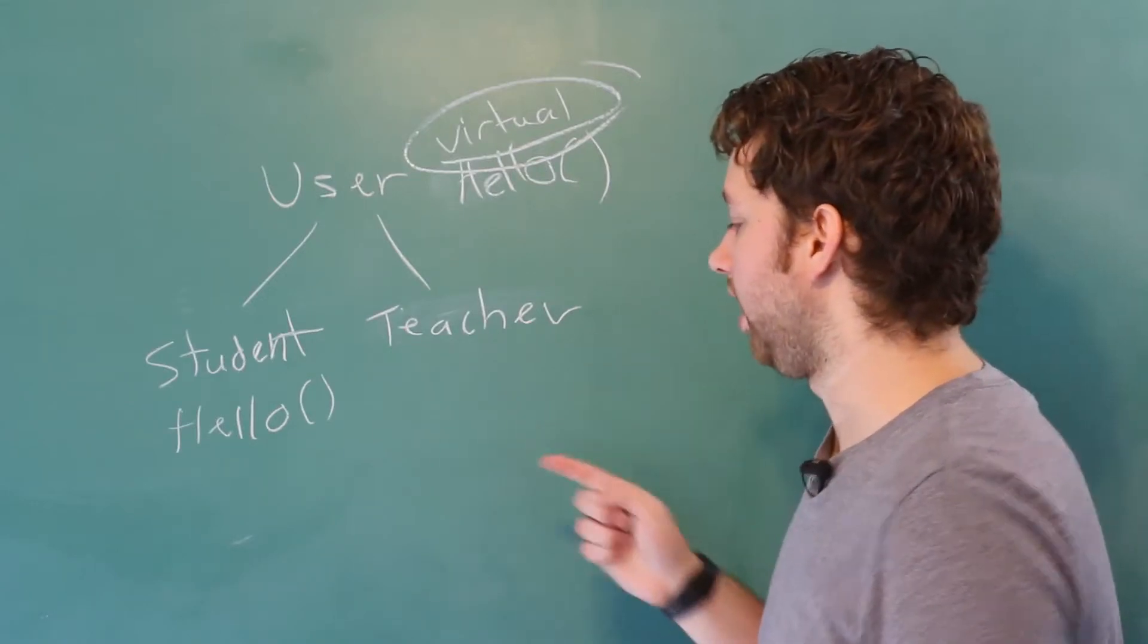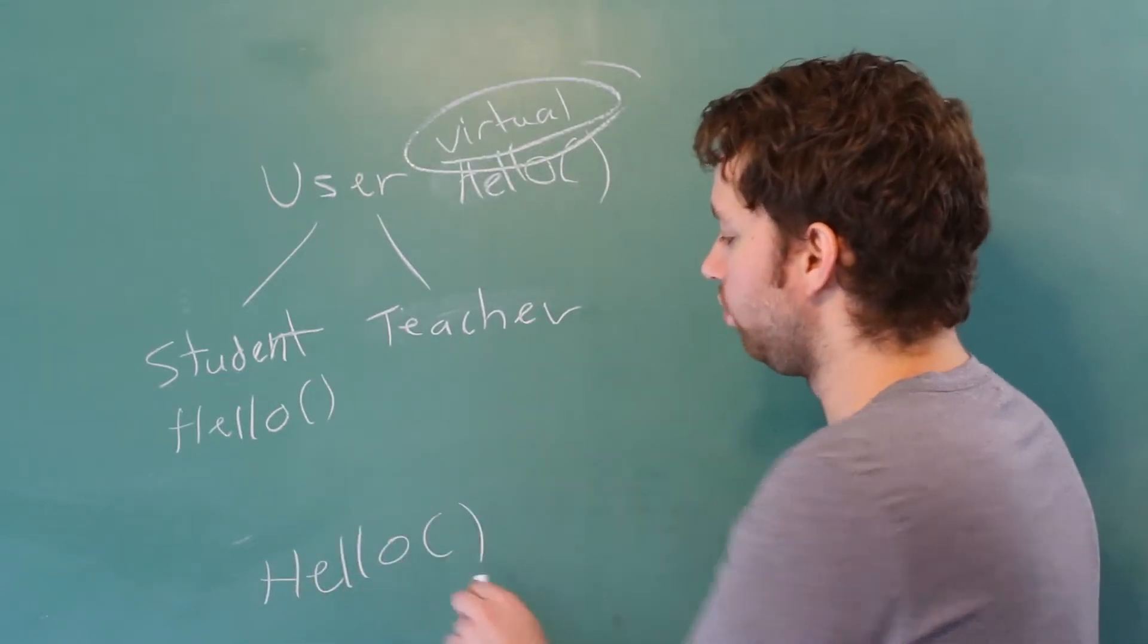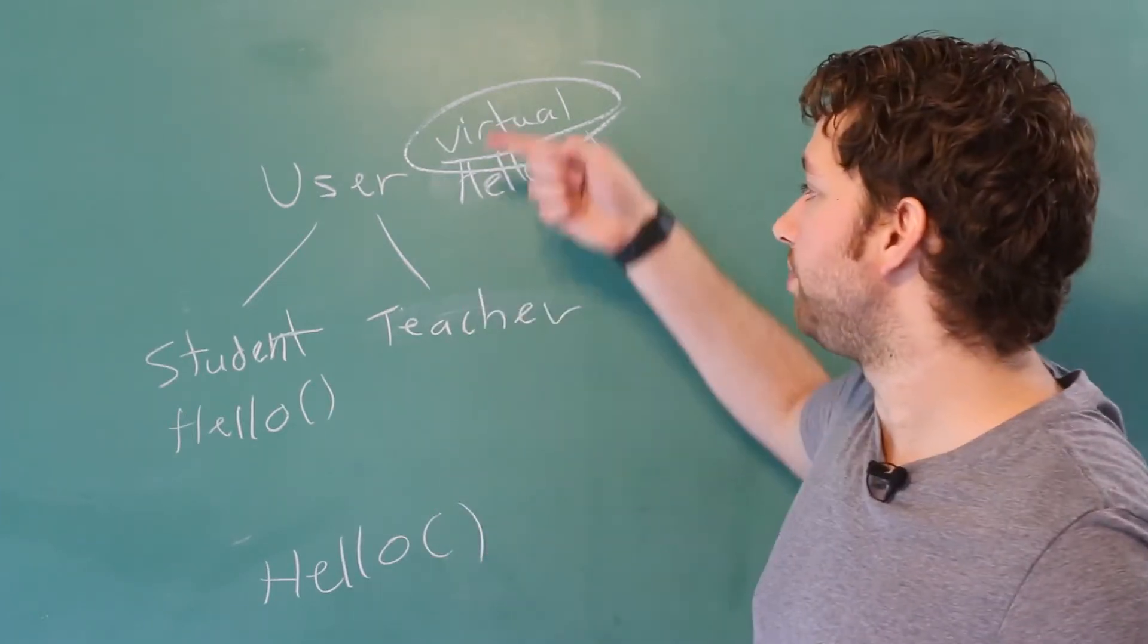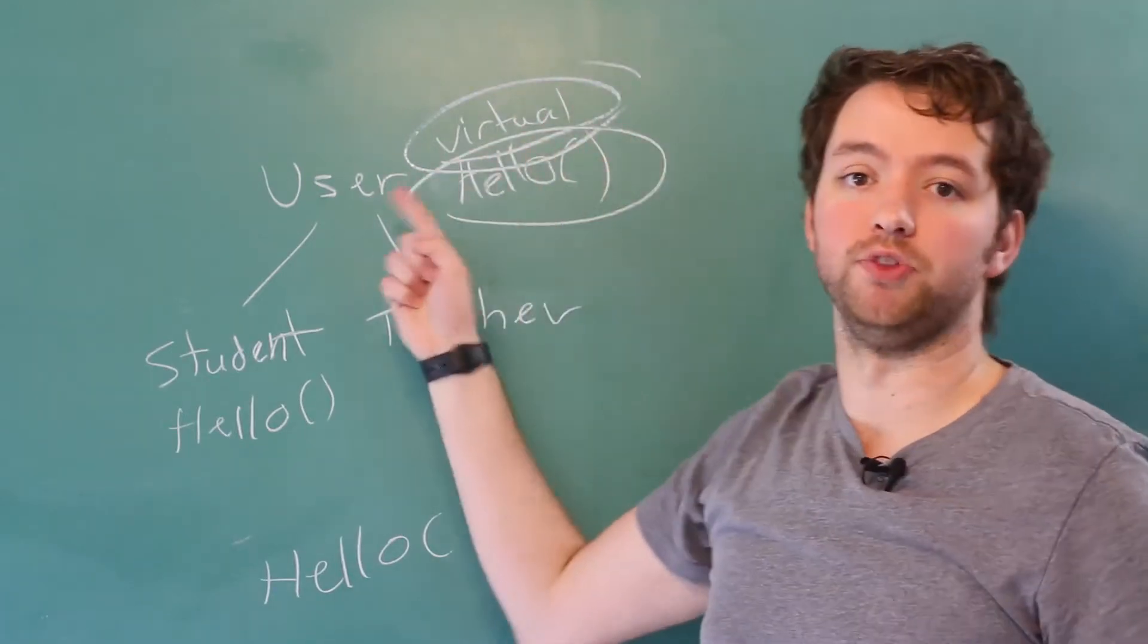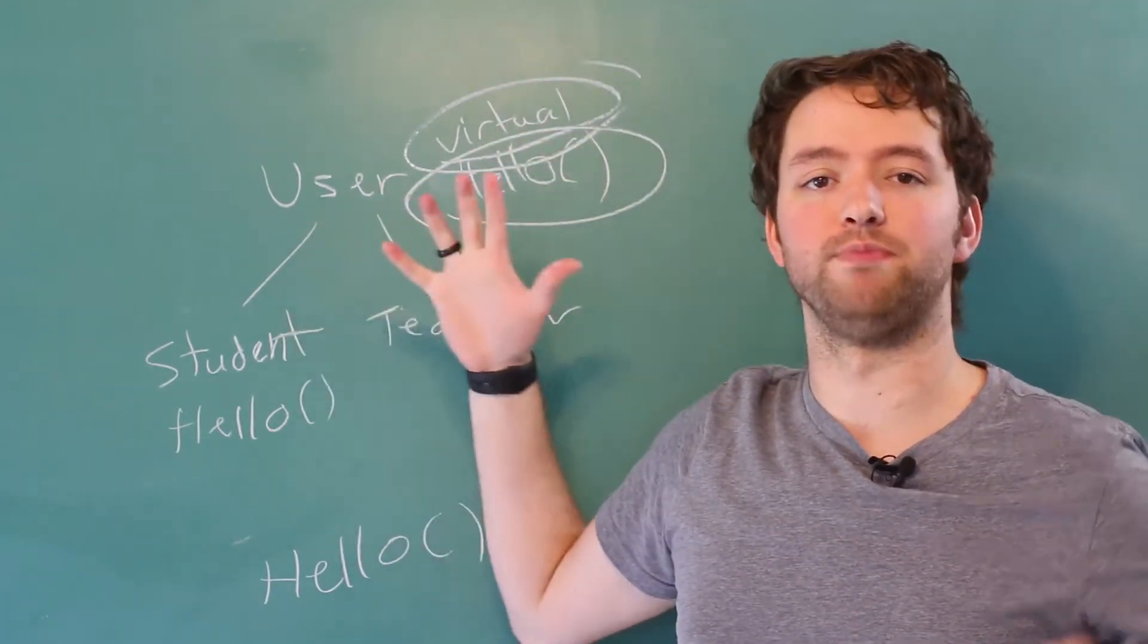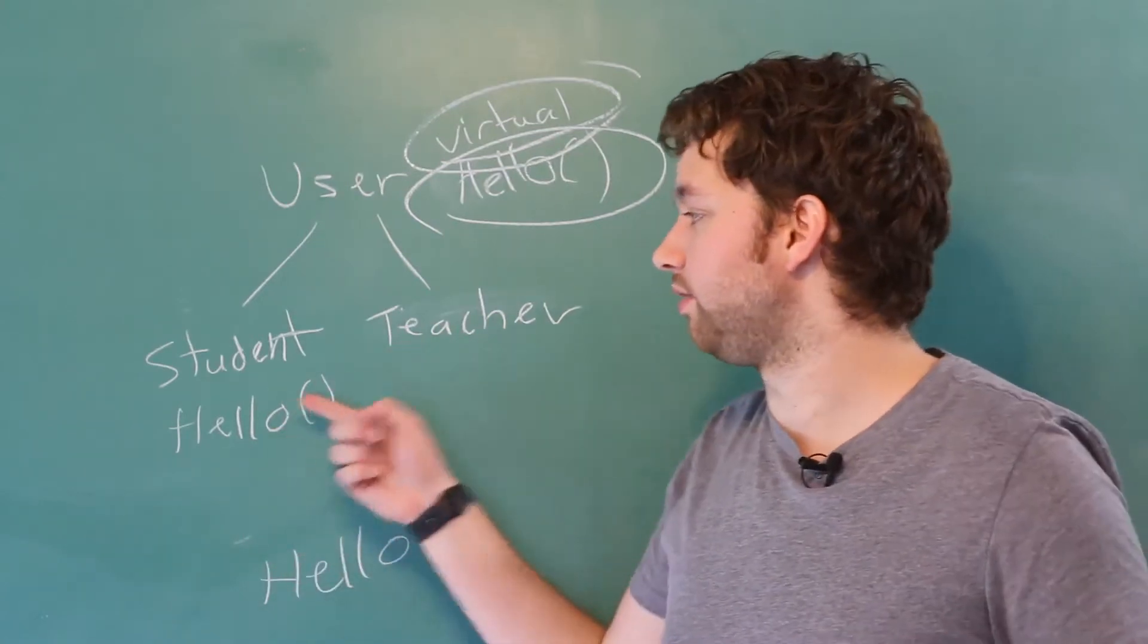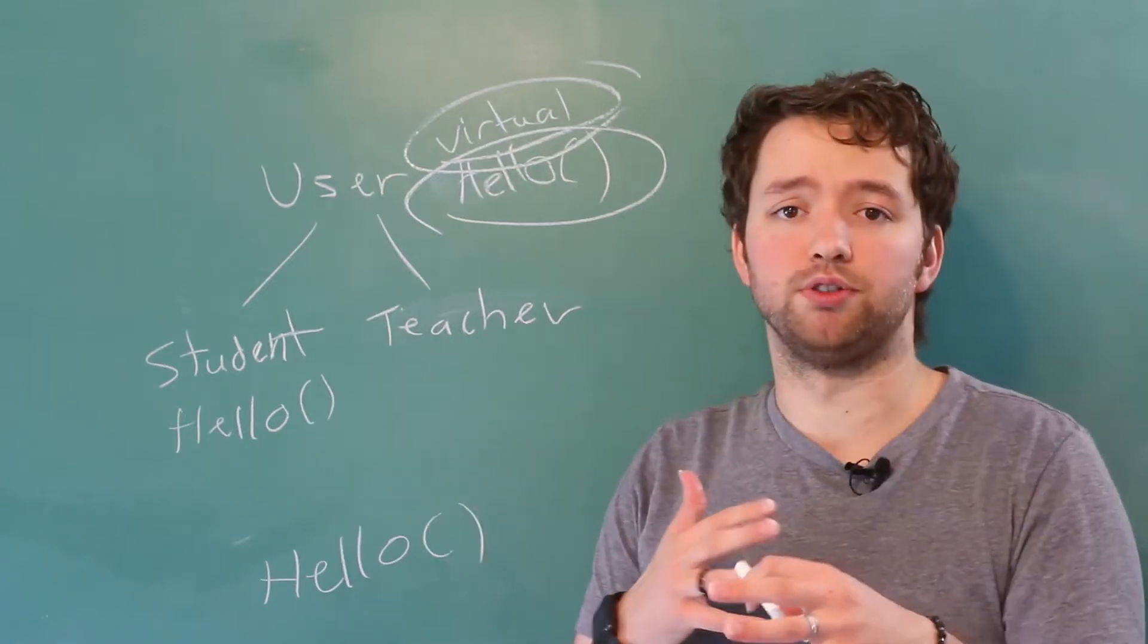If we're working with a teacher and we call Hello, we don't have a specific version for the teacher. So it's going to go up the inheritance hierarchy and grab Hello from the user level, which might be more general. It might just say, 'Hi, my name's Caleb Curry.' Or as the student might say, 'Hi, my name is Sally and I like to study computer science.'